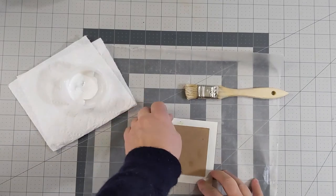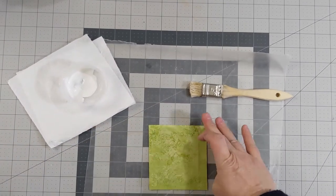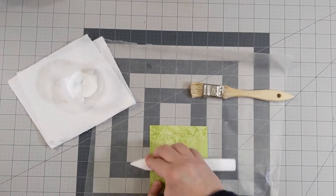After you've pressed it, flip it over and smooth out the paper. You can even do this with a bone folder.